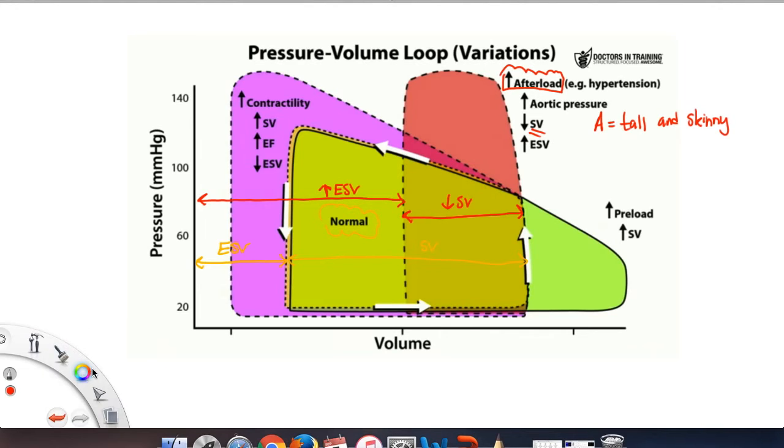Now let's take a look at what happens when we increase contractility. With increased contractility, stroke volume increases because basically you are pumping out more blood. You are more forcefully pumping out more blood.